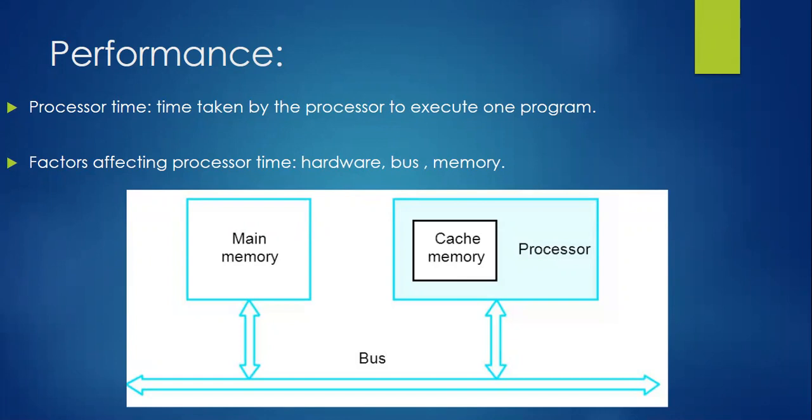There are three main factors which affect processor performance: hardware, bus, and memory. For hardware, if you are using an i5 processor with only 2GB of RAM, and you are using an upgraded version of the processor or RAM but the rest of the devices are basic versions, there will be a mismatch between hardware components. Due to this mismatch, the performance of your system will drastically drop.